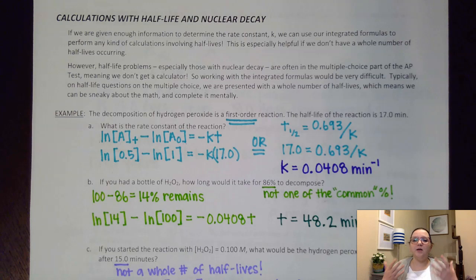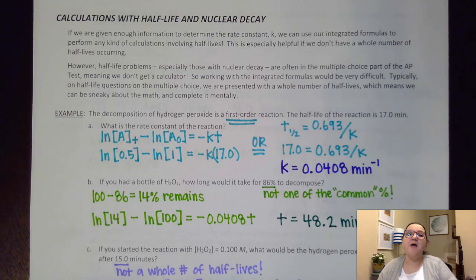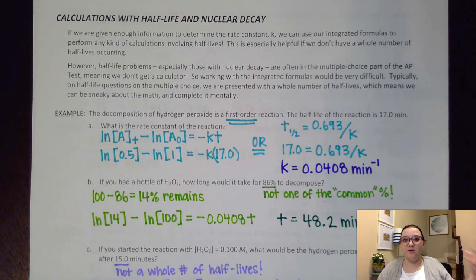All of these problems are going to involve going one or two directions. Either we're going to have some sort of mass or concentration information and we're trying to figure out the time that has passed, or we might be given information about the time that has passed and we're going to try and get to mass or concentration information.